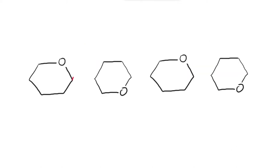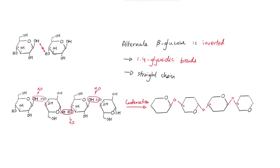Looking at the whole chain together, in a simplified diagram you can see that a 1-4 glycosidic bond forms here, another there, and another one as well. It keeps doing the same thing, but the 1-4 glycosidic bond alternates direction. When the alternate beta-glucose molecule is inverted, they can join together to make 1-4 glycosidic bonds.